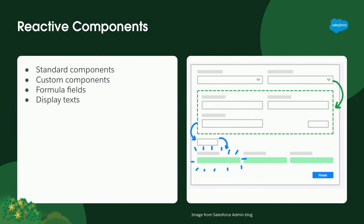But now with reactive components introduced in Winter '24, which is right around the corner, we can have visual feedback between standard components, formulas, and custom components without a server-side trip, which reduces delay and works really fast. It also allows you to keep your reusable LWC as reusable without needing to build single-use LWC screens. And importantly, you don't need to write LWC to have this reactivity — it already exists between standard components and formulas as well, for all components on the same screen, directly in the browser.